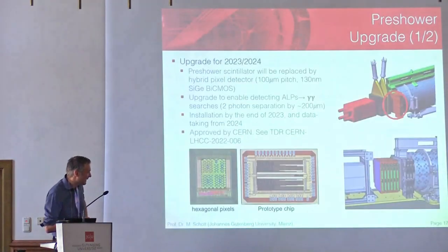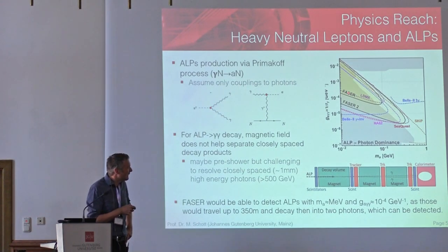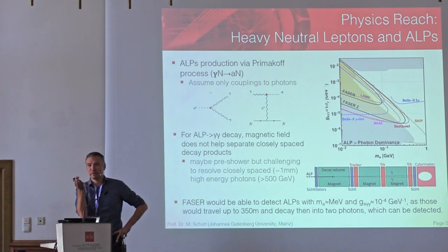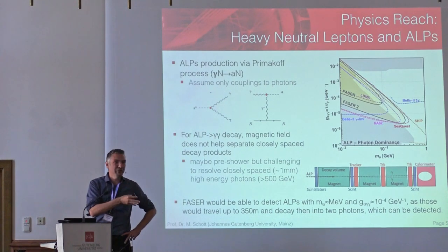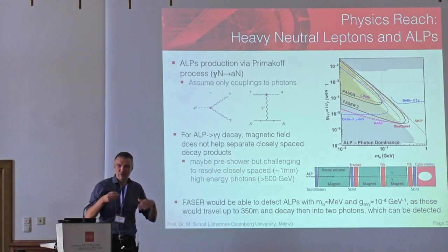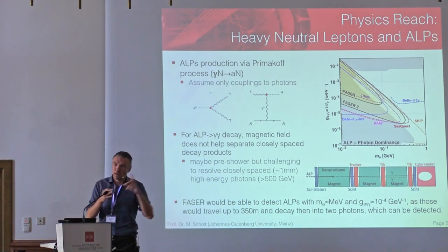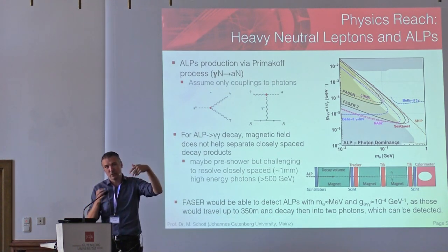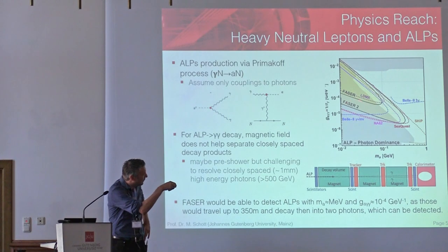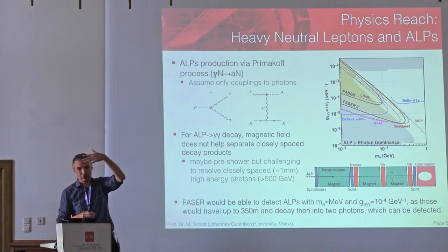On slide 5 you showed some parameter space and mentioned there are theories that may explain the G minus 2. Could you say a few words about that? I can forward you a paper by Matthias Neubert from around 2018 where he proposed several models which could explain the G-2 anomaly. Not only in this parameter space, but also the idea of Higgs decaying to axion-axion. The same parameter space is covered by the FASER model. If you search 'Axions LHC Neubert' on INSPIRE, you'll find this paper.